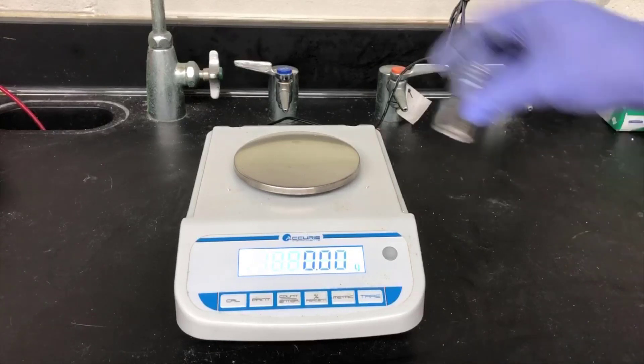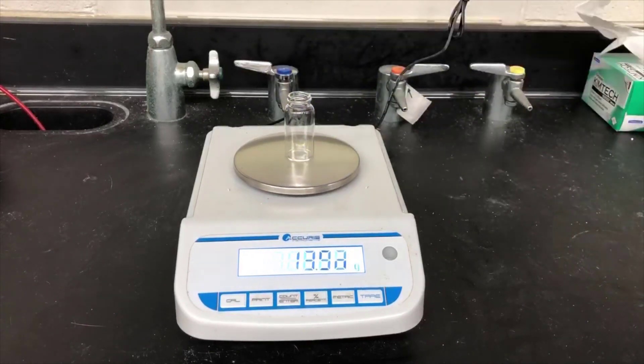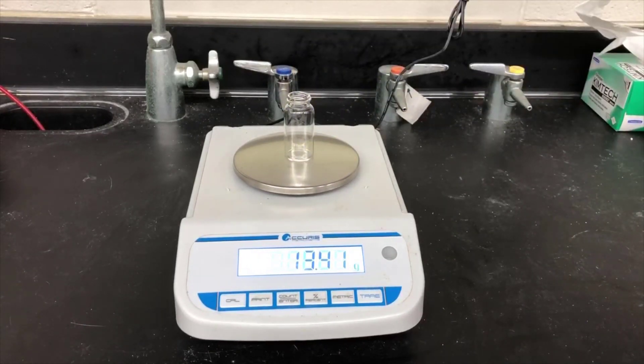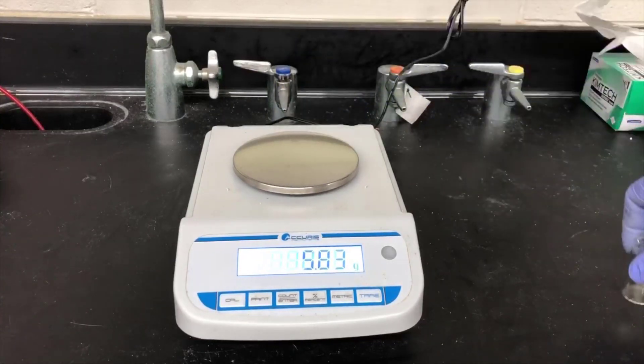Get a clean dry vial, determine its mass, and write this value down in your notebook. We'll use this value to determine the mass of our product by difference once we've evaporated the ether.